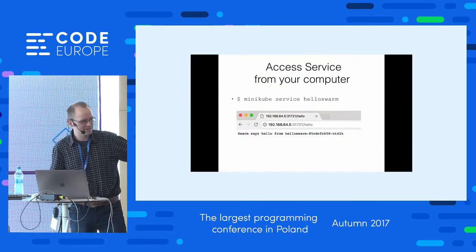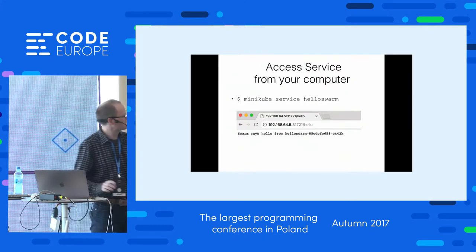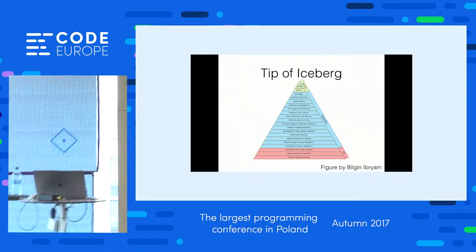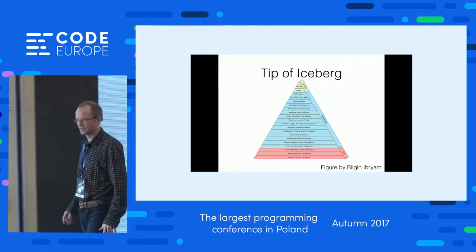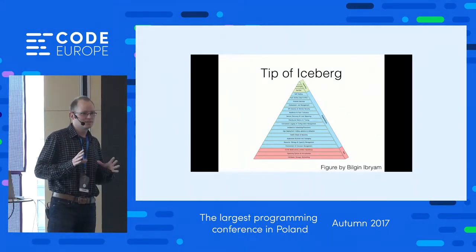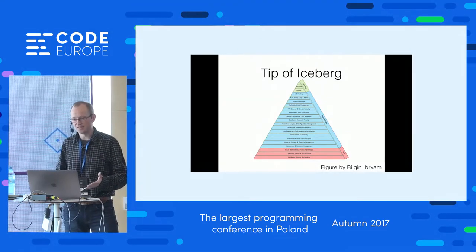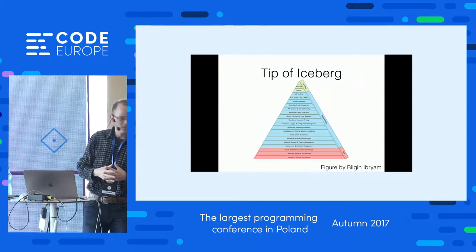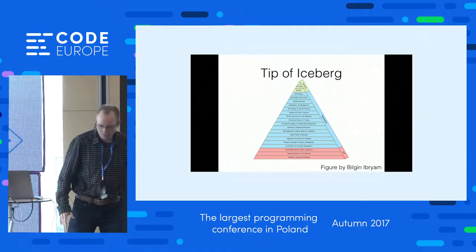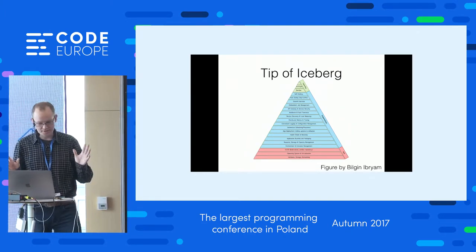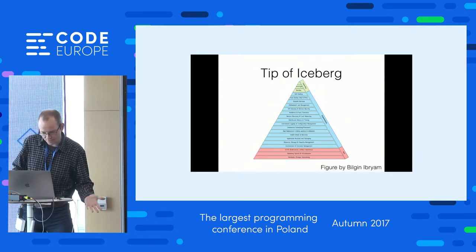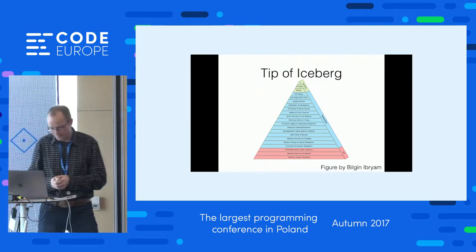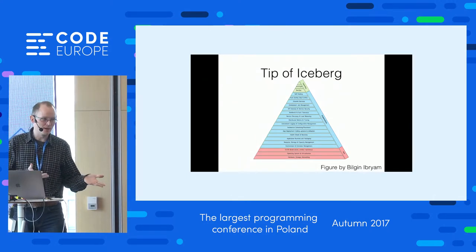That's the remote debug demo. Also regarding calling a service from a web browser: you use "minikube service" and the name of the service, and it opens the web browser with the correct URL. When you get started with this container cloud world as a developer, it's only the top of the iceberg. There are many things to consider — stateful services, API gateways, logging and metrics, health checks including readiness probes, and many other things. This figure from Bilgin, a consultant in the UK who is writing a book on Kubernetes, shows the landscape.